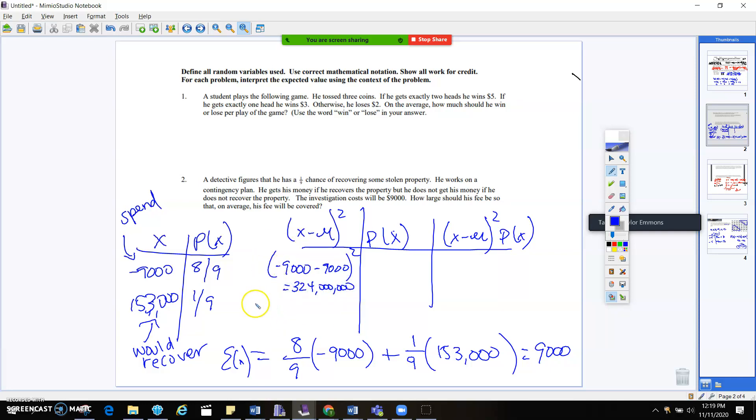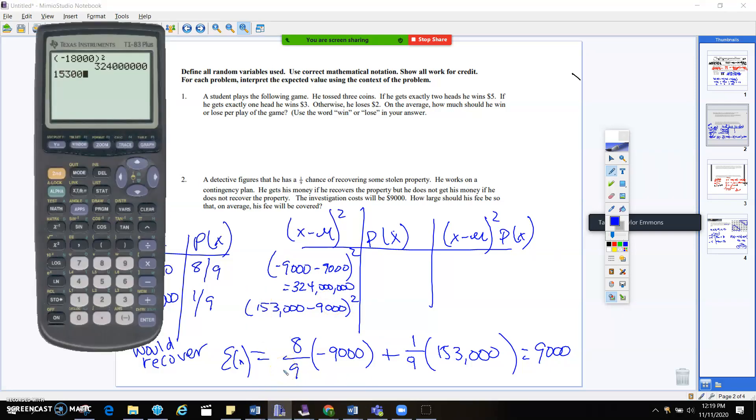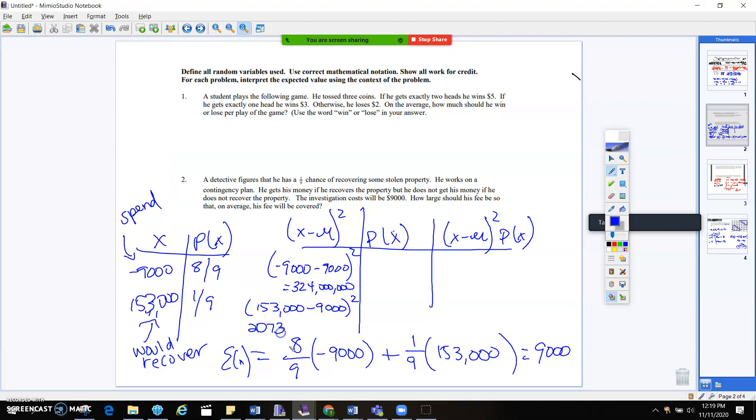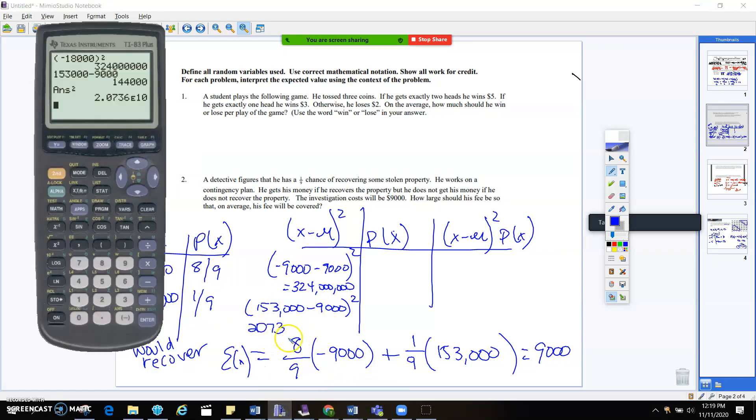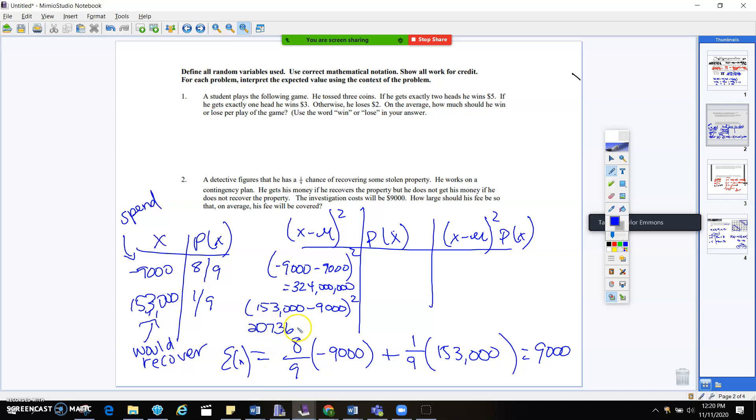Okay. And then on the next one, you're going to take 153,000 minus 9,000, and then square that. And then square. It's going to be real decimal places. So 1, 2, 3, 4, 5, 6, 7, 8, 9, 10. Yikes. Okay. And then the probabilities are going to go in here. I always change them to a decimal just because it makes my life easier.